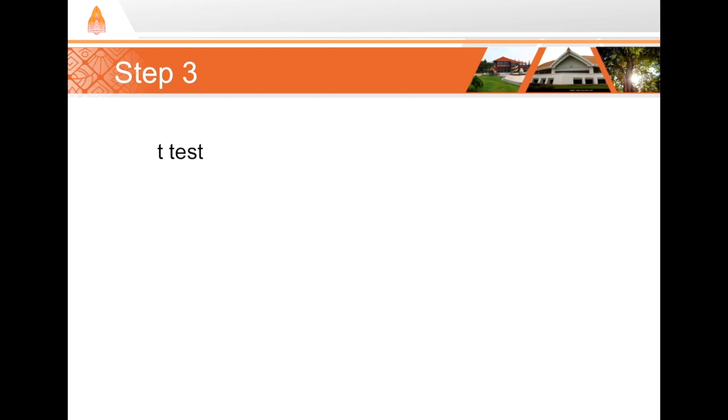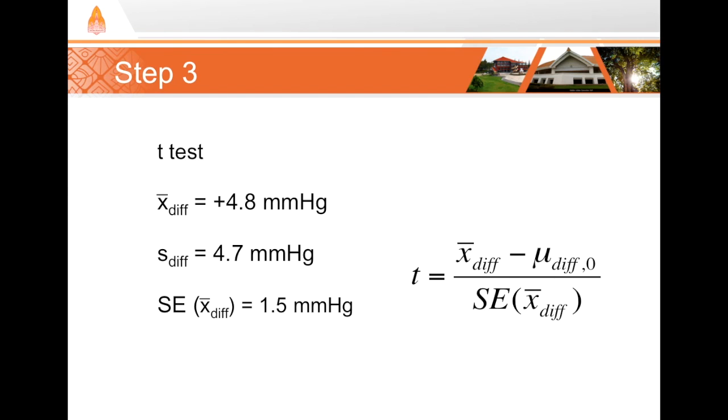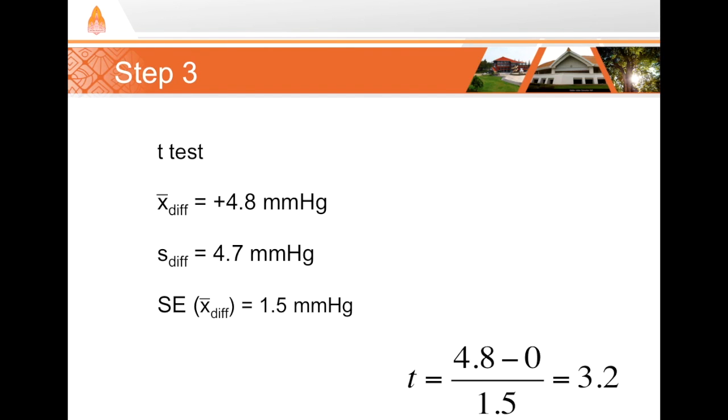Instead we compute the actual t-statistic. The first thing we do is look at the mean difference. We see that the mean of the differences is an increase of 4.8 millimeters mercury. The next thing we do is compute the standard deviation of the differences, and we find that that is 4.7 millimeters mercury. From that and the sample size we can get the standard error of the differences, and we see that that is 1.5 millimeters mercury. We plug those numbers into our t-statistic formula, and when we do that we find that we have a t-statistic value of 3.2.